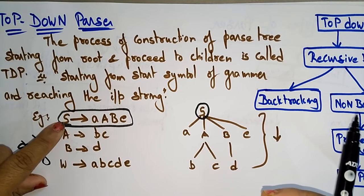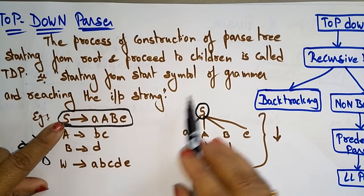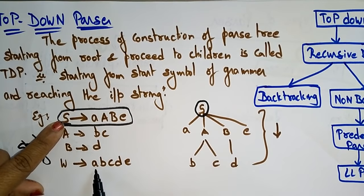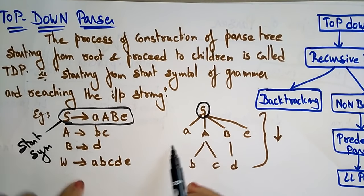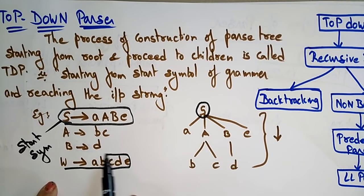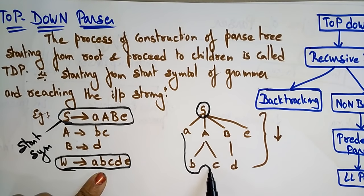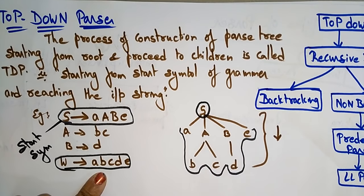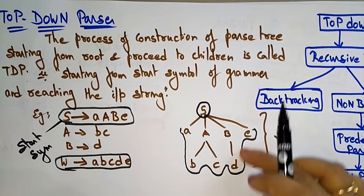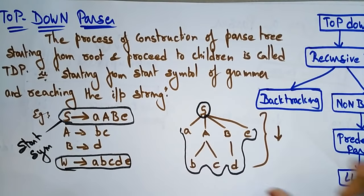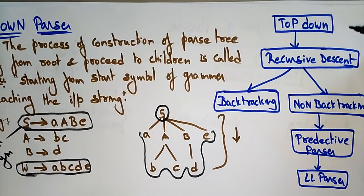The process begins from the starting symbol of a grammar and reaches the input string. The final goal is to reach the input string — for example, w = abcd. So from top to down, starting from the start symbol of a grammar and reaching the input string, this is the top-down parser concept.